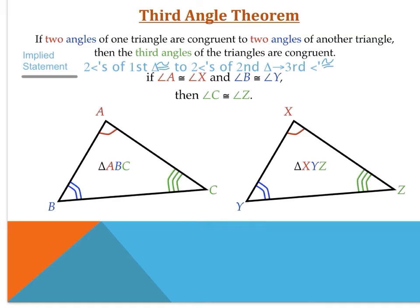Let's talk about the third angle theorem. It states: if two angles of one triangle are congruent to two angles of another triangle, then the third angles of the triangles are congruent. The implied statement shortens this to: two angles of the first triangle congruent to two angles of the second triangle implies the third angles are congruent. So if angle A is congruent to angle X and angle B is congruent to angle Y, then angle C is congruent to angle Z.